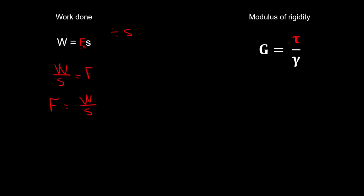Now let's look at the reverse. This is the modulus of rigidity formula: G equals shear stress divided by shear strain. When I move shear strain to the other side, I do the opposite of what's on this side — so I multiply by shear strain (gamma). That gives G times gamma equals shear stress, or rewritten: shear stress equals modulus of rigidity times shear strain. Multiply becomes divide, divide becomes multiply.